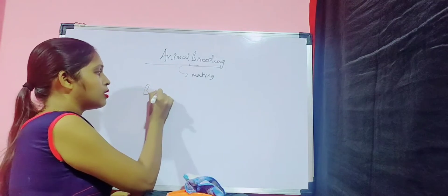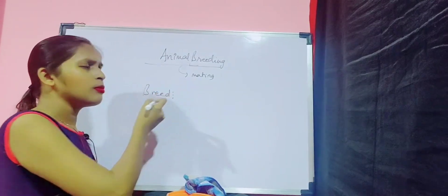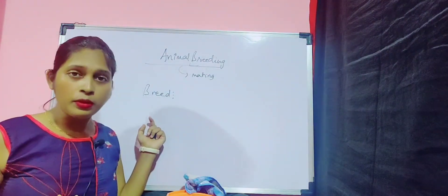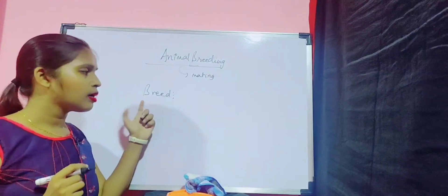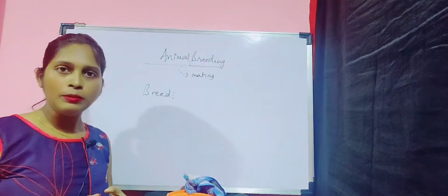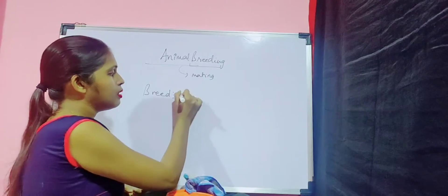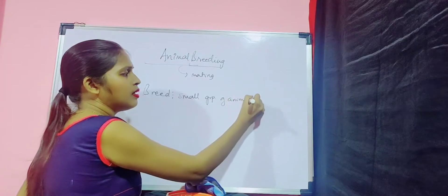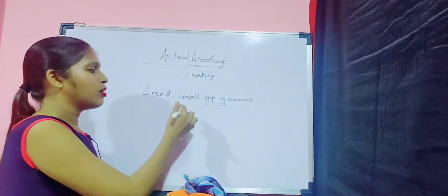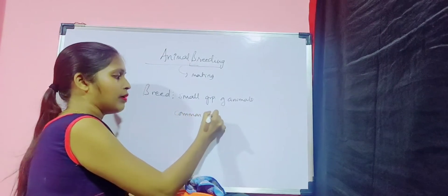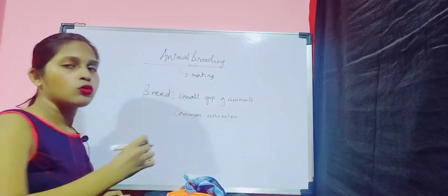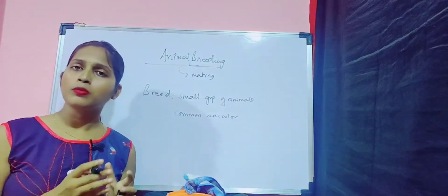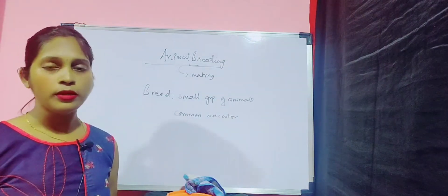Now, what does breed mean? This term is very familiar to us — we have learned different breeds in farm management. A breed is basically a small group of animals that share a common ancestor. So breeding means mating, and breed means a small group of animals having a common ancestor.